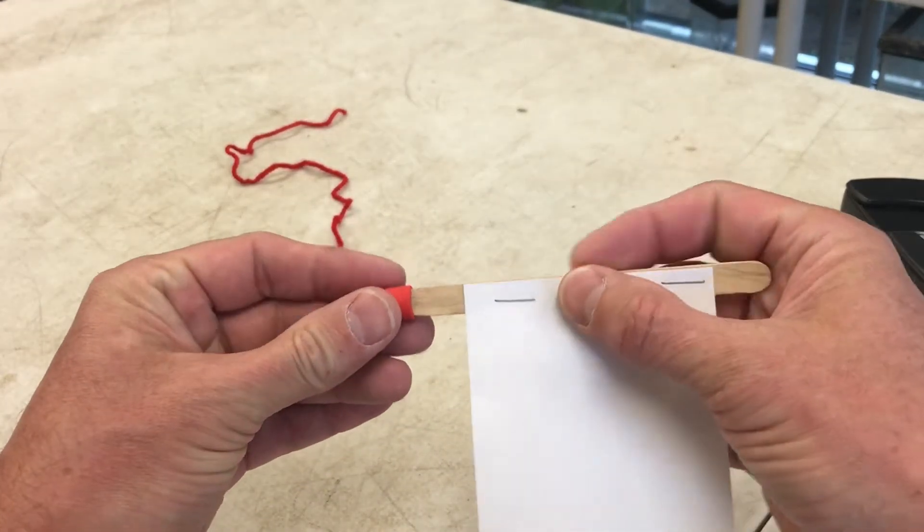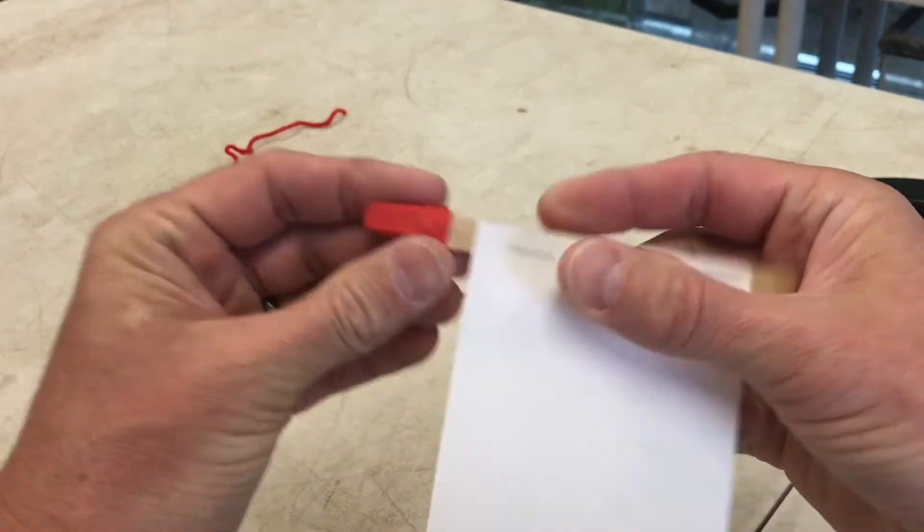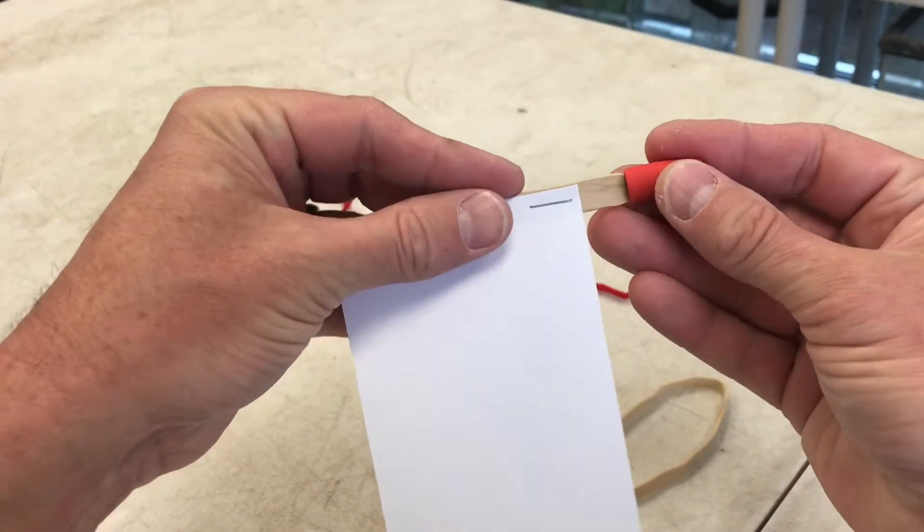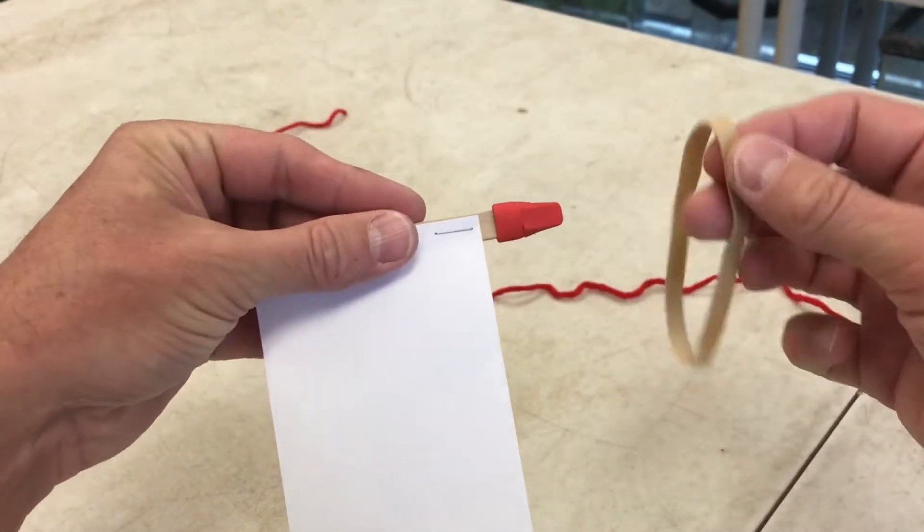Next, you're gonna want to put just a couple of these pencil erasers on the end. These are basically going to create a buffer that we're going to put our rubber band across.